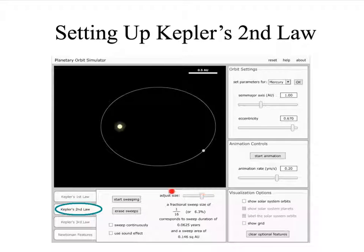Here we see the ability to adjust the size and notice that it's set as a fraction so you can set it for example here it's set to be 1/16th of the total orbit. And we can also start the animation by simply clicking the start sweeping button and then every time you click this it will create a new sweep.